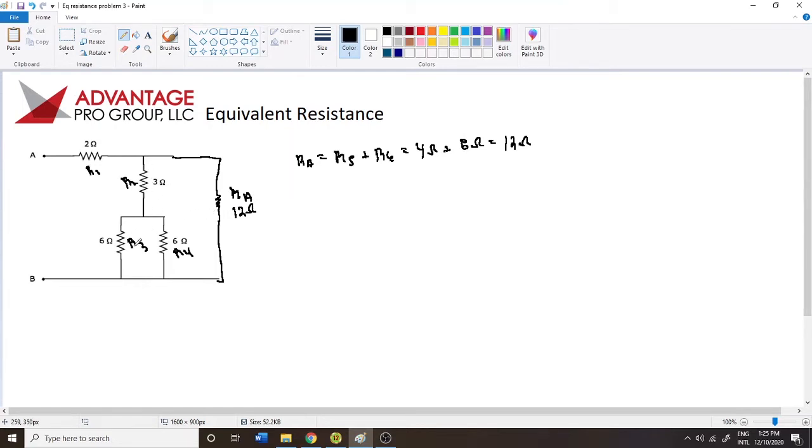So now we're going to look at this section here. These are in parallel with each other. So we're going to call this RB is equal to R3 in parallel with R4, and that is going to be 6 ohms. Oops, I'm sorry, I said plus, but it's in parallel. 6 ohms in parallel with 6 ohms, which ordinarily would be R3 times R4 over R3 plus R4. But because these are the same value, you can say that it's R3 over 2 or R4 over 2.